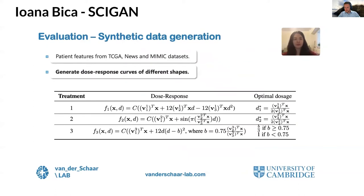The nature of the treatment effect estimation problem does not allow for meaningful evaluation on real-world datasets due to the inability to observe all counterfactuals. While there are well-established benchmark synthetic models for the categorical treatment setting, no such model exists for the dosage setting, so we propose a semi-synthetic data simulation model to evaluate CyGAN against benchmarks. We obtain patient features X from real datasets — TCGA, NEWS, and MIMIC-3. We consider three treatments each with corresponding dosage, and each treatment type W is associated with parameters V sampled randomly per experiment. The shape of the dose-response curve F_W for each treatment is given in a table, along with a closed-form expression for the optimal dosage.